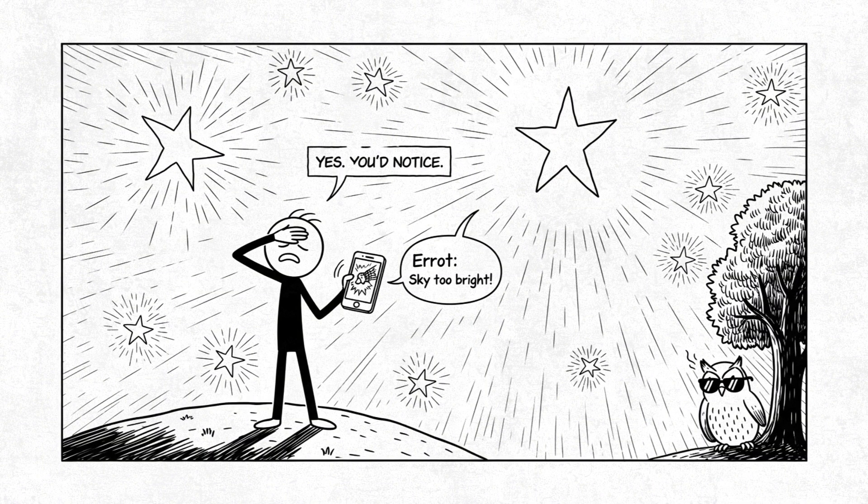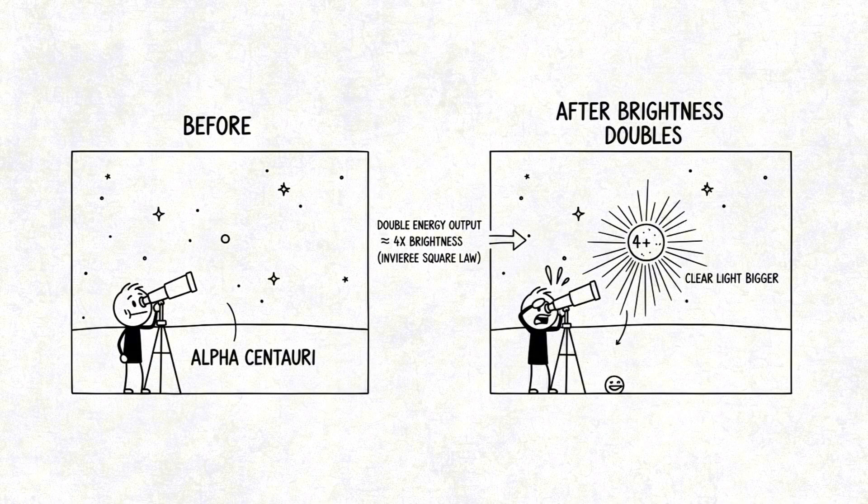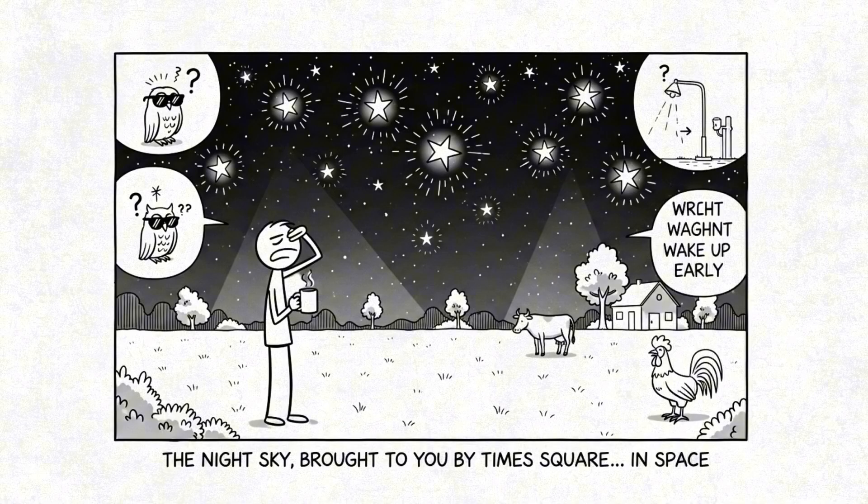You might wonder, would we actually notice those distant stars being brighter? Absolutely. Because brightness follows the inverse square law. Double the output, and nearby stars like Alpha Centauri appear four times brighter. The entire night sky would light up like Times Square got into astrophysics.